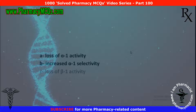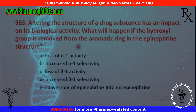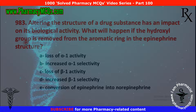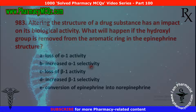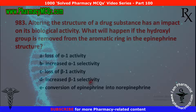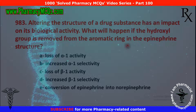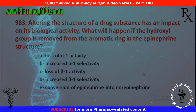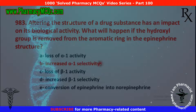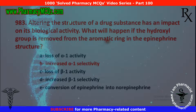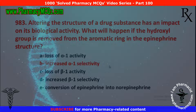Next MCQ: altering the structure of a drug substance has an impact on its biological activity. What will happen if the hydroxyl group is removed from the aromatic ring in the epinephrine structure? Options are: loss of alpha-1 activity, increased alpha-1 selectivity, loss of beta-1 activity, increased beta-1 selectivity, and conversion of epinephrine into norepinephrine. The correct answer is increased alpha-1 selectivity. Removing the hydroxyl group from the aromatic ring in epinephrine structure results in increased alpha-1 selectivity.